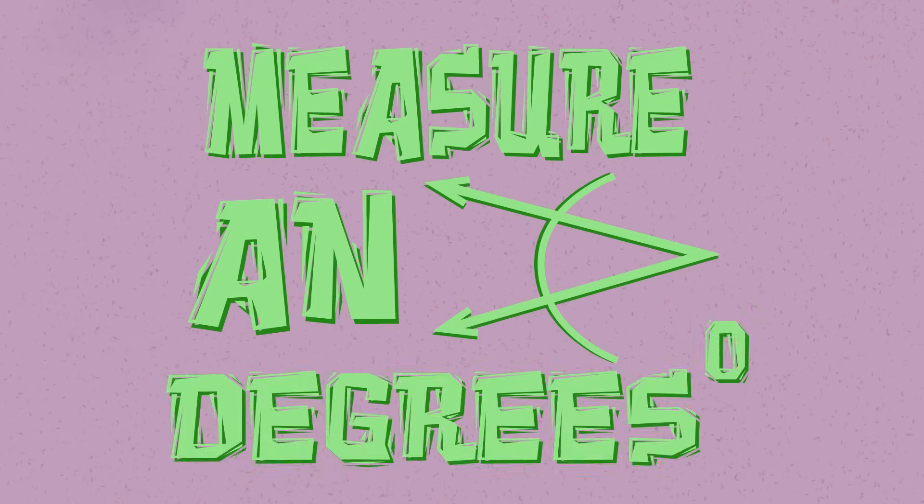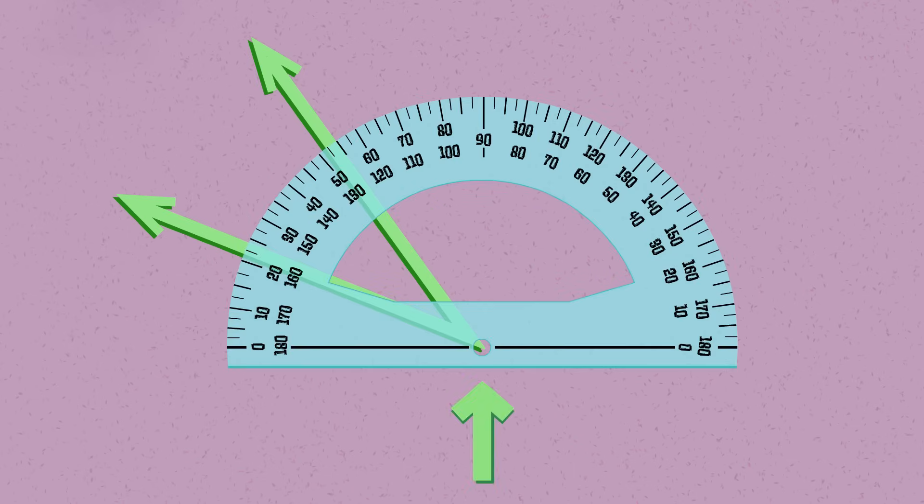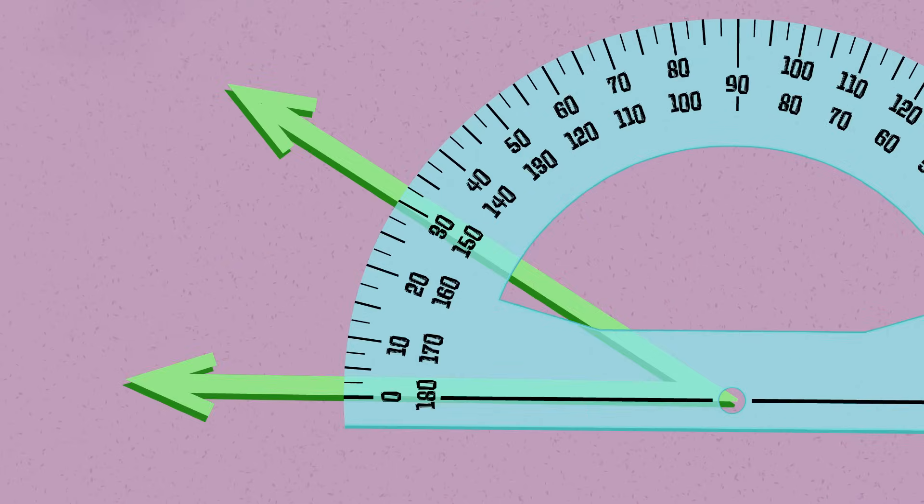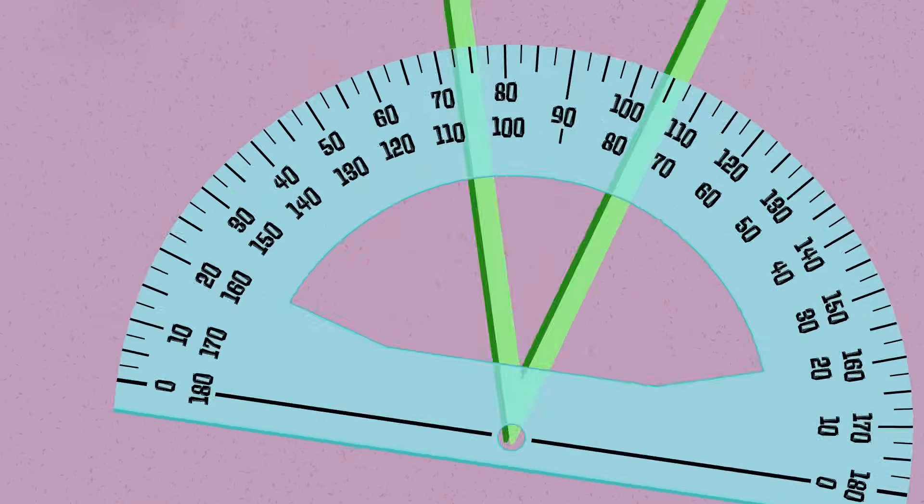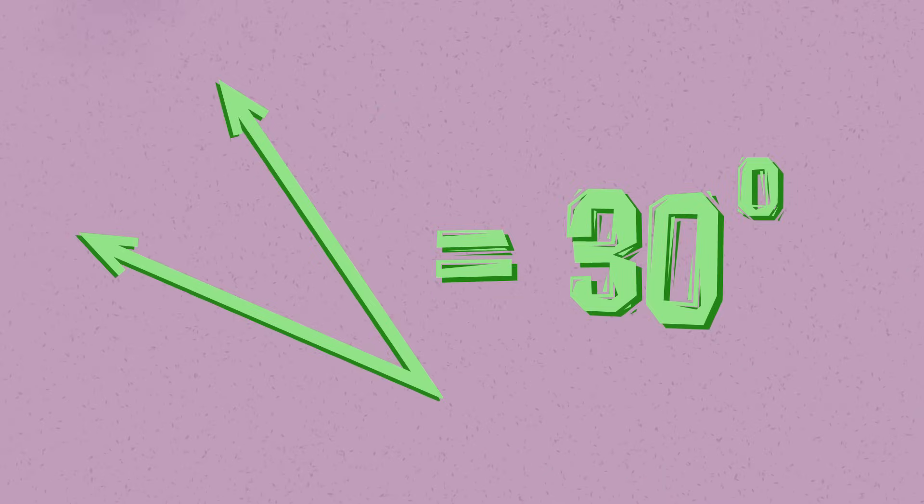To measure an angle's degrees with a protractor, place the vertex at the hole in the center. Line up one ray at zero on the protractor. Remember that the zero can be on top or under. Count up to where the other ray points at a number. That will be the angle's measurement.